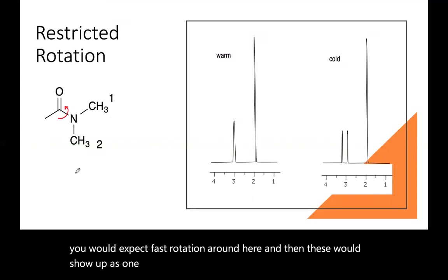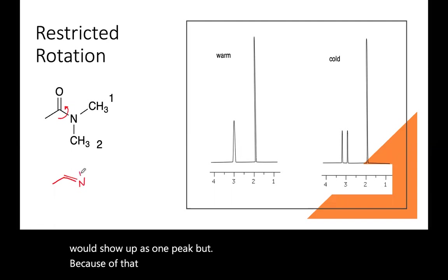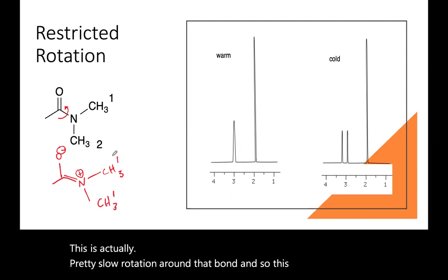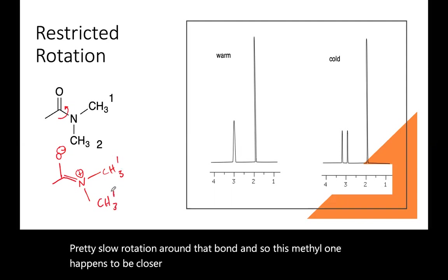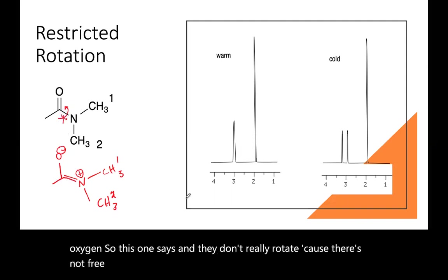But because of that resonance structure, this is actually pretty slow rotation around that bond. And so this methyl one happens to be closer to the oxygen. And methyl two is trans to the oxygen. So this one's this. And they don't really rotate because there's not free rotation around that pi bond.